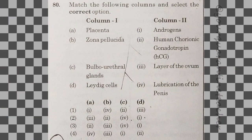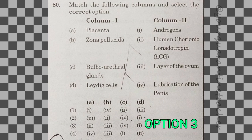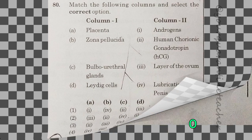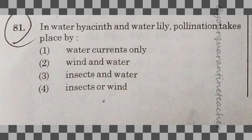80th question: match the following columns. The answer involves HCG — I have already covered this in class. Option 3 is the right answer. 81st question: in water hyacinth and water lily, pollination takes place by — option 4 — insects or wind. That is the correct answer.